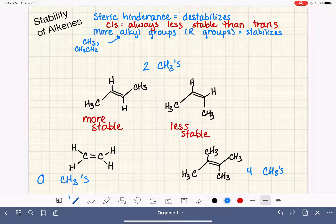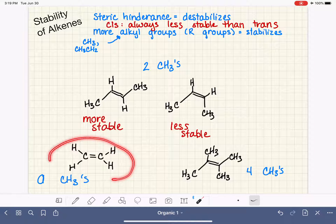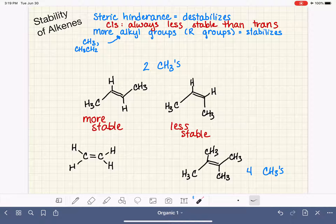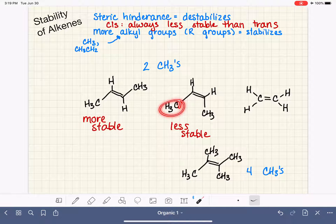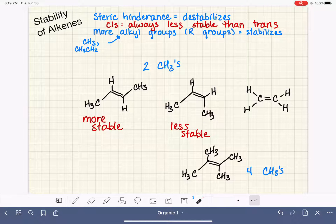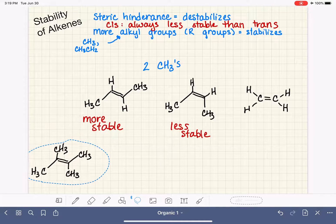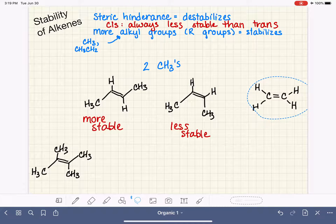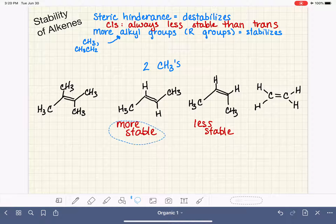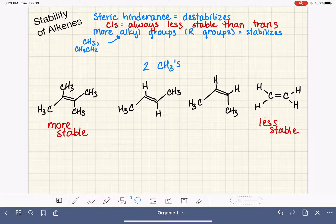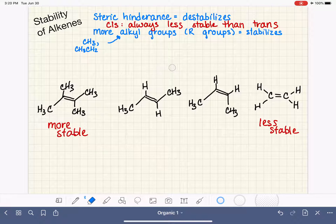Now that we understand that the more alkyl groups that we have, the more stable it is, we know that this molecule with zero alkyl groups on it is actually going to be less stable than a molecule with two alkyl groups. And our molecule that has four alkyl groups is going to be more stable. The most stable is the one that has four alkyl groups, and the least stable is the one that has zero alkyl groups.